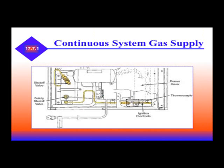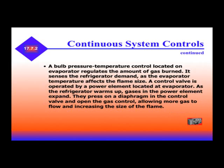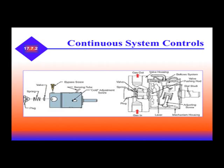At the bottom of an absorption refrigerator, you have shutoff valves, ignition electrodes, thermocouples, and covers. Heat and gas valves automatically control the amount of gas burned, and the flame size varies on demand. Electronic ignition ignites the flame, and the system may have an automatic flame relight system. All continuous systems require gas volume and safety controls. A bulb pressure-temperature control located on the evaporator regulates the amount of gas burned. It senses the refrigerator's demand as the evaporator temperature affects the flame size. As the refrigerator warms up, gases in the power element expand, pressing on the diaphragm in the control valve, opening the gas control and allowing more gas to flow, increasing the flame size.